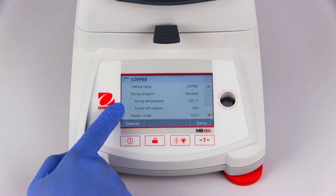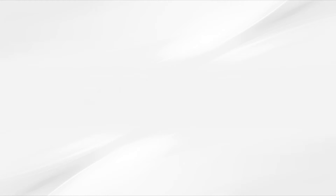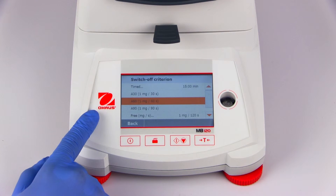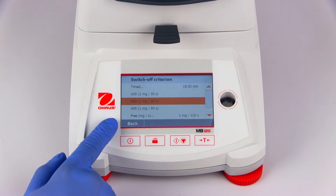The next parameter is to set the shutoff criterion. A shutoff criterion defines when the moisture analyzer stops heating and considers a measurement complete. This can be done by defining a time or via several automatic options that are available. The MB120 Moisture Analyzer offers three built-in automatic shutoff criteria and two user-configurable options.